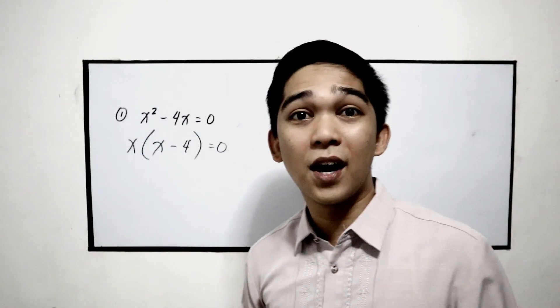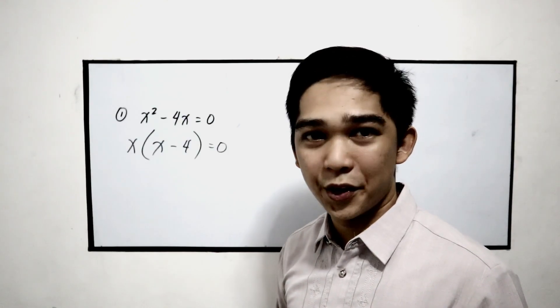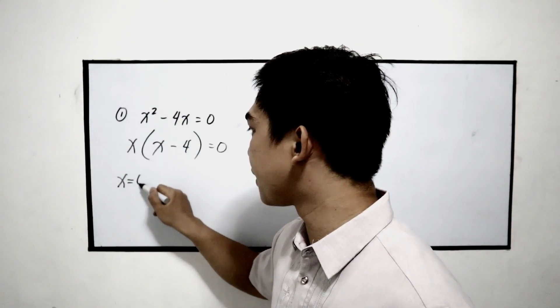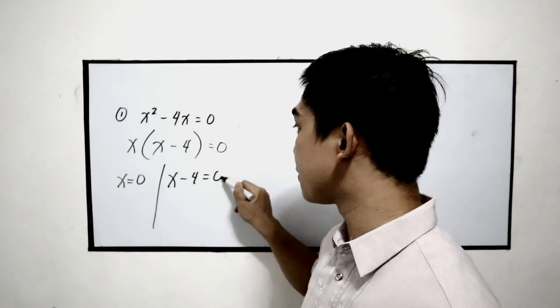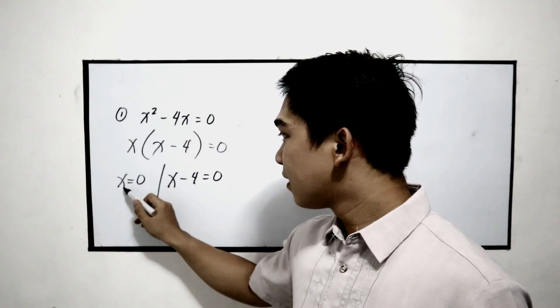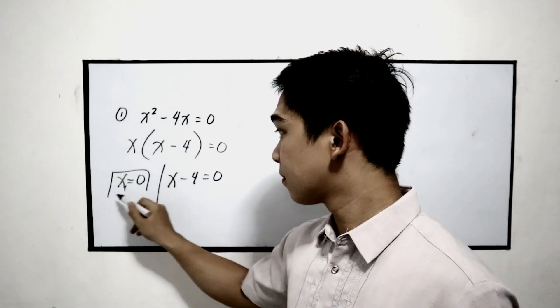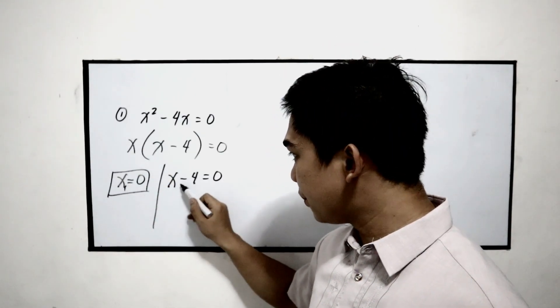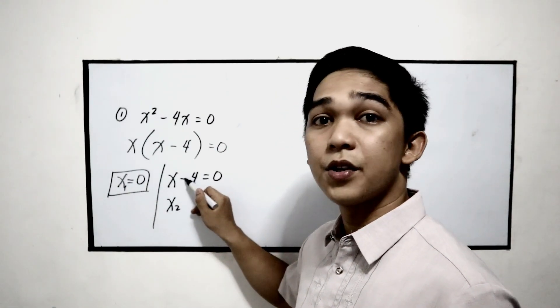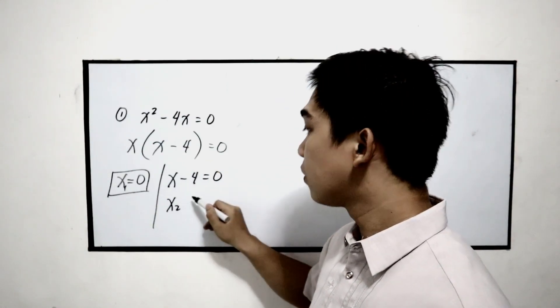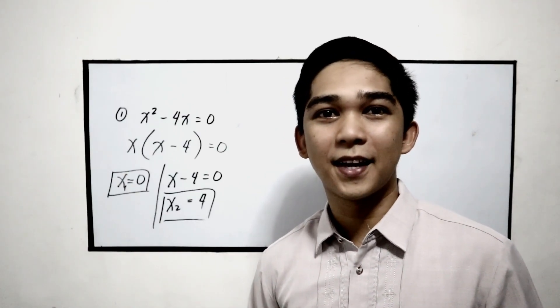Now we can get the value for x. Equate to 0. So x equals 0. And the other factor is x minus 4 equals 0. x equals 0, this is already our final answer. We can box it now. And x sub 2, x sub 2, transpose negative 4 will become positive 4. That is our final answer.